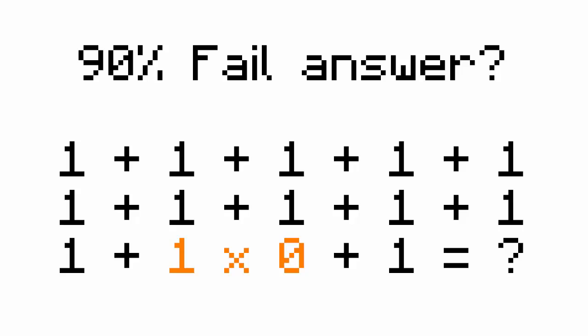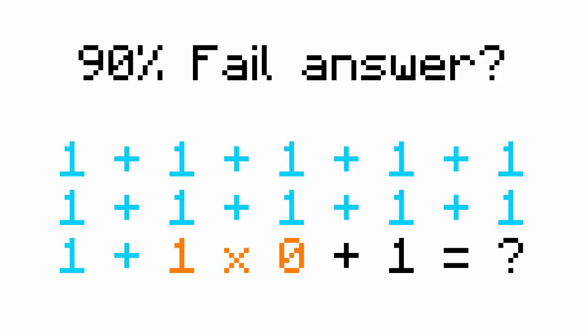You have to do multiplication before doing addition. So it's 1 times 0, and then from the beginning 1 plus 1 plus 1, plus whatever, plus the 0 that you got from 1 times 0, and then plus 1.